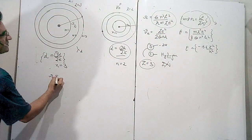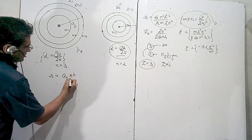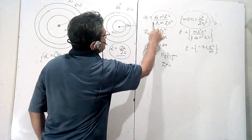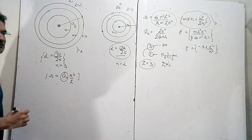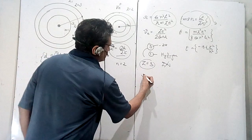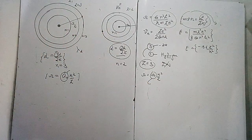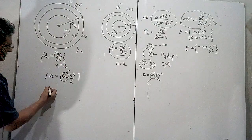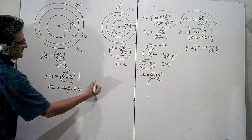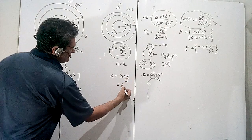Applying r = a₀n²/z: for lithium, r_Li = a₀ × 9 / 3 = 3a₀. For helium, r_He = a₀ × 4 / 2 = 2a₀. Now apply the angular momentum quantization formula mvr = nh/2π in both cases.